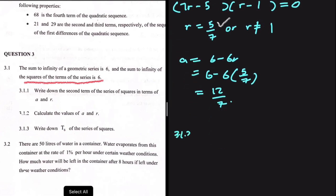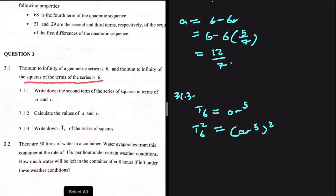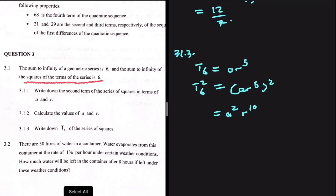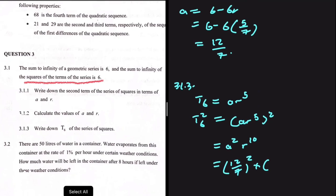For 3.1.3, we need to write down T6 of the series of squares. Under normal circumstances T6 equals AR to the power of 5, but for the series of squares, T6 squared equals (AR to the power 5) squared, giving A squared times R to the power of 10. Substituting A equals 12/7 squared, multiplied by R equals 5/7 to the power of 10, gives approximately 0.1.